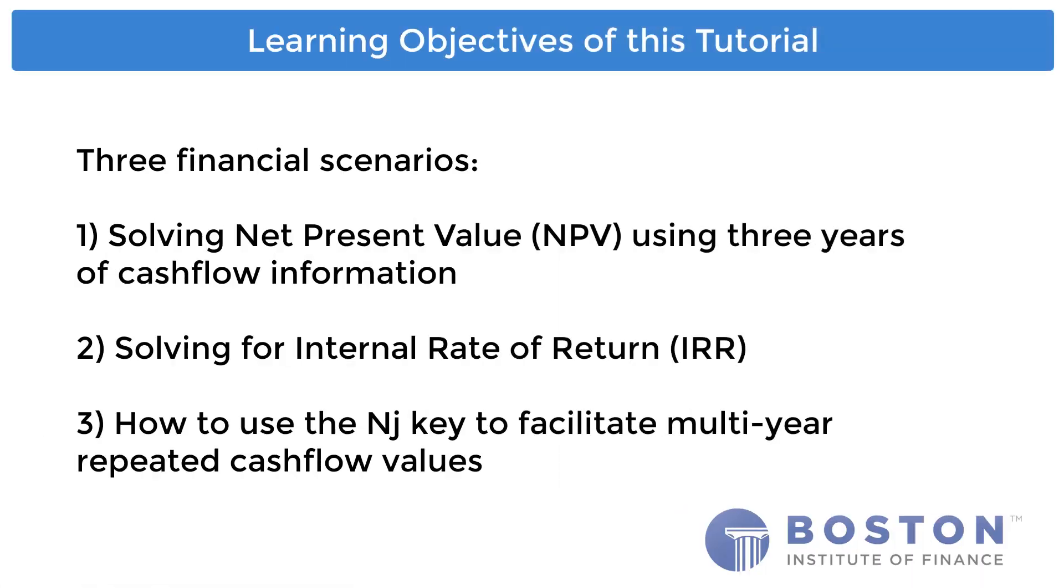You will be guided through three financial scenarios involving uneven cash flow analysis. The first example will deal with solving net present value with three years of cash flow information. The second example will guide you on solving for internal rate of return, and the third example will guide you on using the NJ key to facilitate multi-year repeated cash flow values.